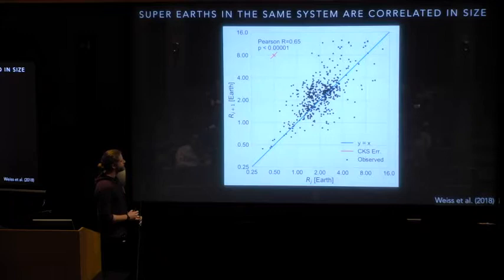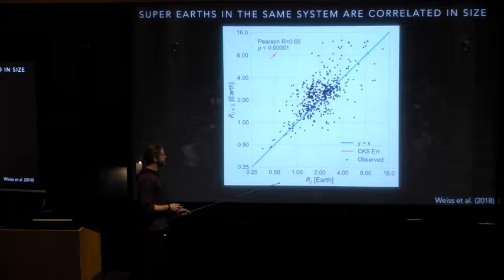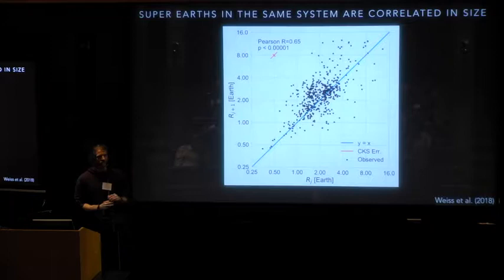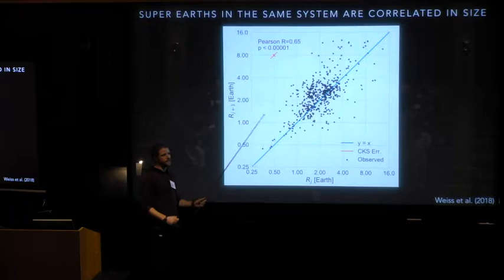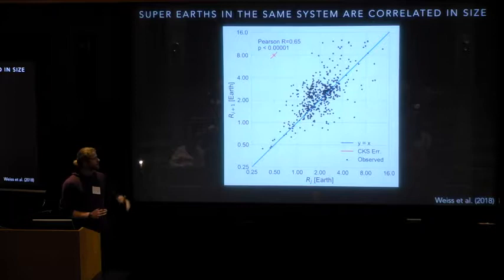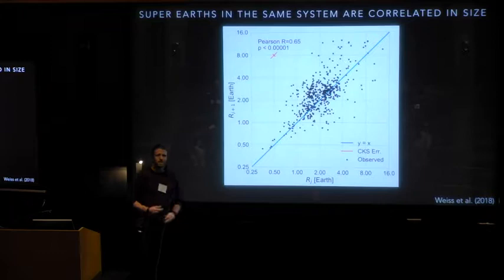The first is a result from Lauren Weiss et al. So what she and her collaborators did is they looked at the sizes of different Kepler planets, super-Earth planets, in the same system. What they found is that the sizes of these planets are strongly correlated with one another. So they're just plotting here the size of one planet and the planet farther out within the same system. What they find is that if you just plot a straight line along that, there's a strong correlation between the sizes of the two planets. This is exactly what we'd expect if there's some limited mass scale coming in here, and that mass scale is weakly dependent on the semi-major axis of the planets in your system.